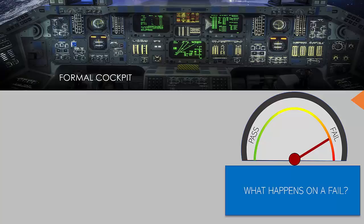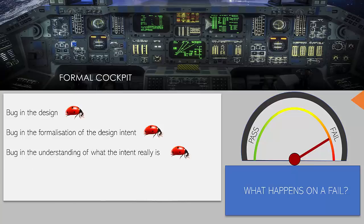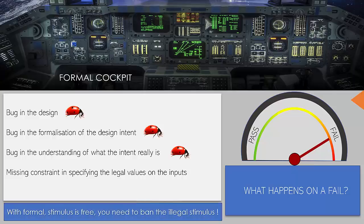So then what happens on a fail? There could be a bug in the design, or actually, there could be a bug in the formalization of the design intent. There could be a bug in the understanding of what the intent really is. Missing constraint in specifying the legal values on the inputs. With formal, you see, stimulus is free. So you need to constrain the legal stimulus. Otherwise, you get a lot of spurious failures. Not very productive.